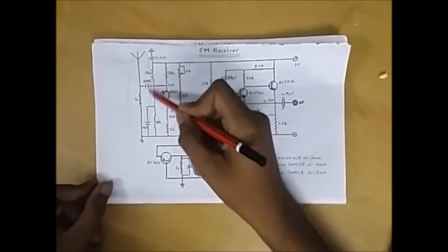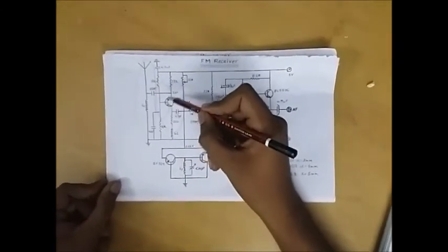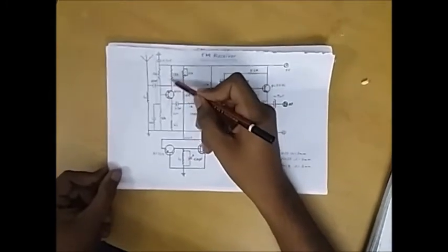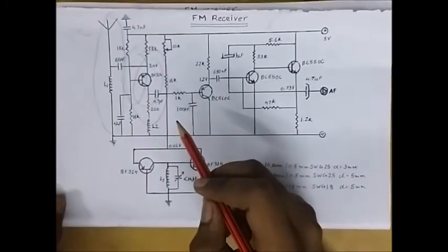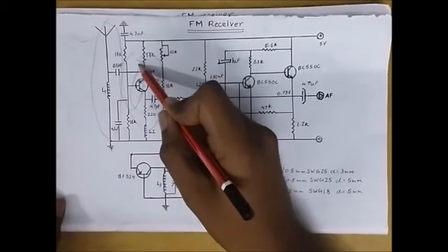The RF amplifier filters the desired frequency and amplifies the filtered signal. After this the signal is transferred to a mixer stage.